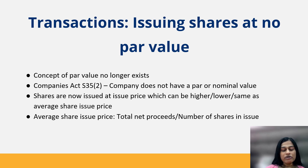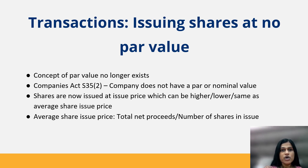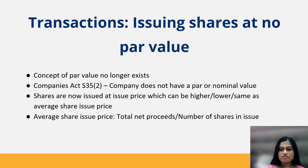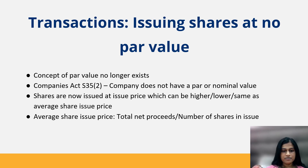Today we are going to focus on two transactions that are really important in understanding companies. The first is issuing shares at no par value. The concept of par value no longer exists — as per the Companies Act, a company does not have a par or nominal value. Shares are now issued at an issue price, which can be higher, lower, or the same as the average share issue price. The average share issue price is calculated as total net proceeds divided by the number of shares in issue at that point in time.